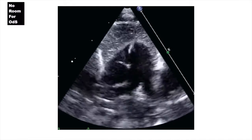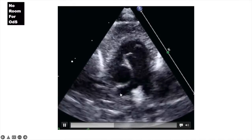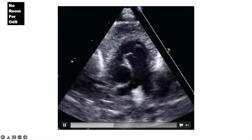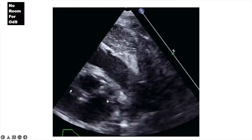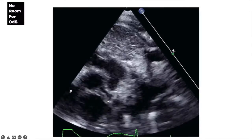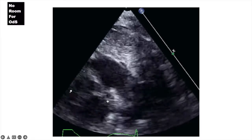The branch PA comes next. We're very close to the branch PA view, and we then move to the ductal view, where we assess the PDA.